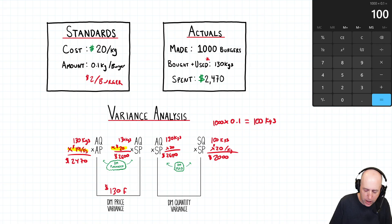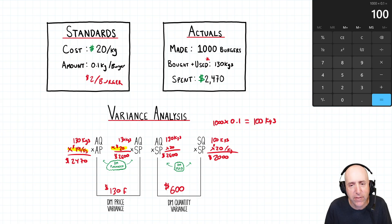100 kilograms times twenty dollars per kilogram is two thousand dollars. So, the difference here, again, the variance between the left calculation and the right is six hundred dollars. We're off by six hundred dollars. Now, is this a good variance or a bad variance? Oh, I said the wrong words. Is this a favorable variance or an unfavorable variance? And the answer here is, well, I should have used 100 kilograms of beef to serve all those customers. I actually used 130 kilograms of beef to serve all those customers. I used too much beef. This is unfavorable.